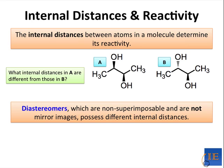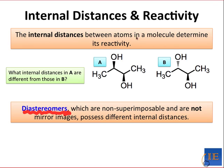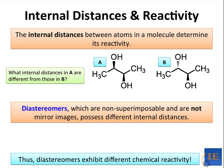Because these two molecules differ in their internal distances, and because they're not superimposable on one another, we call them diastereomers. This is one kind of stereoisomer, but diastereomers are non-superimposable and not mirror images. They possess different internal distances — that's the hallmark of diastereomers, so that the distance between two key atoms in the structures is different. As you might expect, these two diastereomers would exhibit different chemical reactivity.